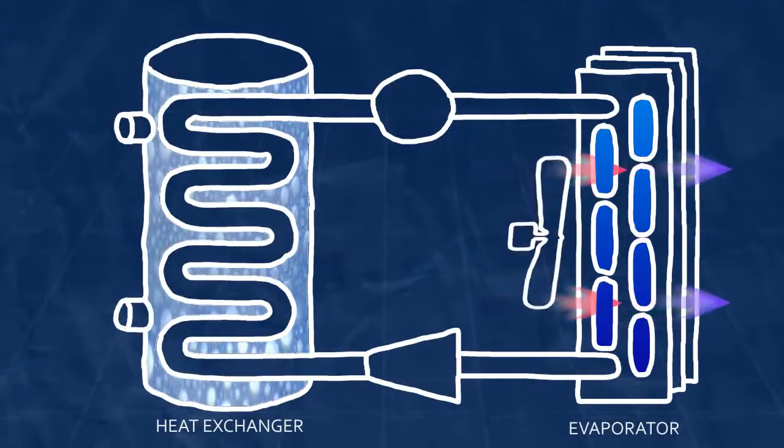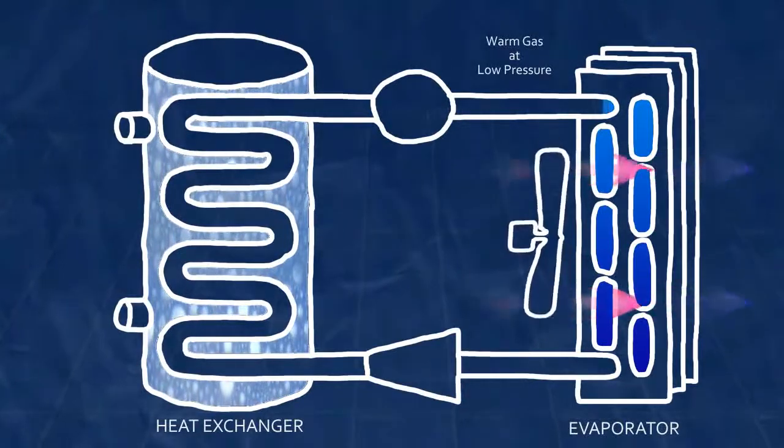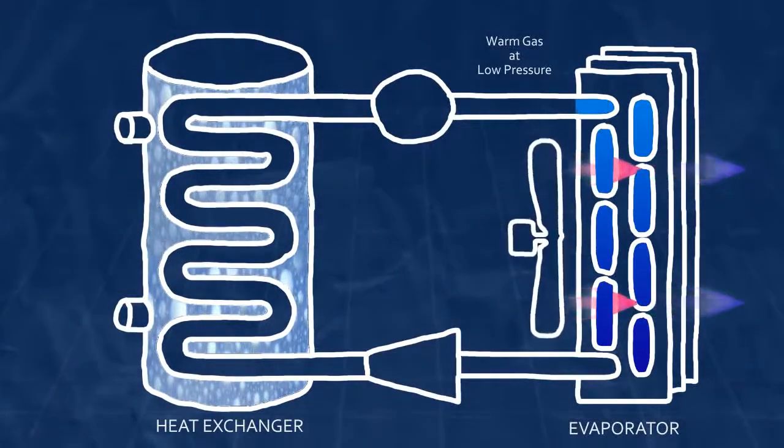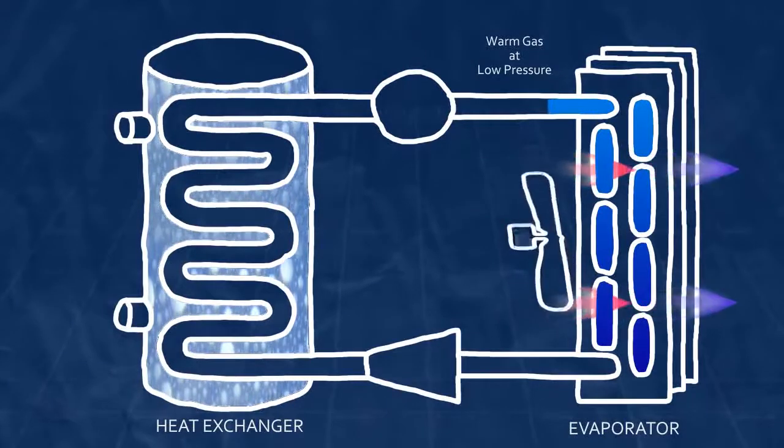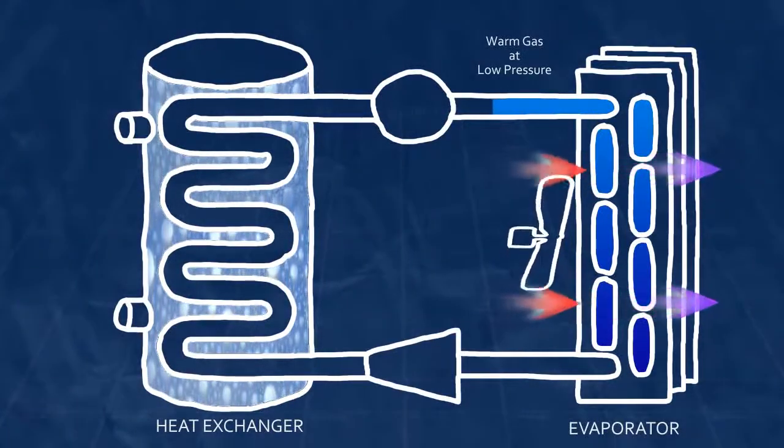Once it's passed through the evaporator, the refrigerant is a warm gas, the cold liquid having been warmed and vaporized by the room air. The refrigerant is still not hot enough to heat water, however, so that's where the compressor comes in.